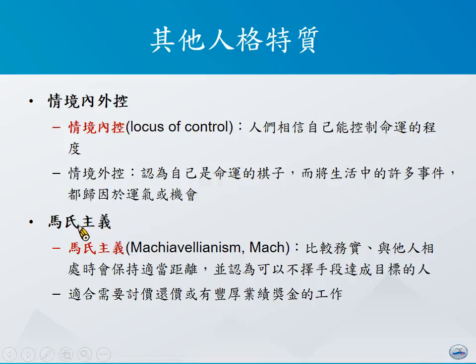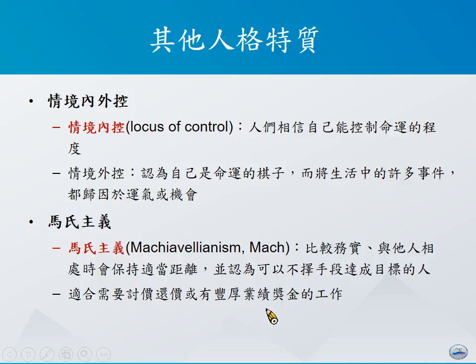另外一种叫做马基维利主义（Machiavellianism）。这个概念是指一个人比较务实，跟他人相处时会保持适当的距离，并且认为为了达成目标可以不择手段。像具备马基维利主义特质的人，可能就会比较适合从事一些需要进行讨价还价以及业绩奖金较为丰厚的工作。对于这样的员工，我们该给予的是较为实质的报酬或较为强烈的惩罚，而诉求较为崇高的理想对于马基维利主义特质的人，事实上并没有太大效果。